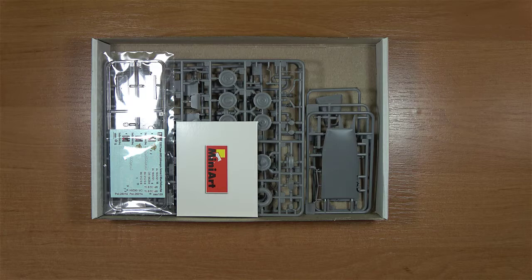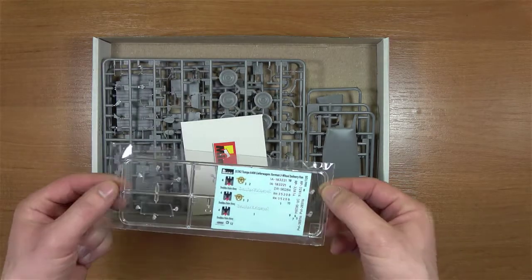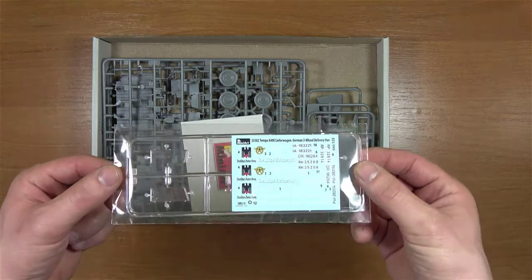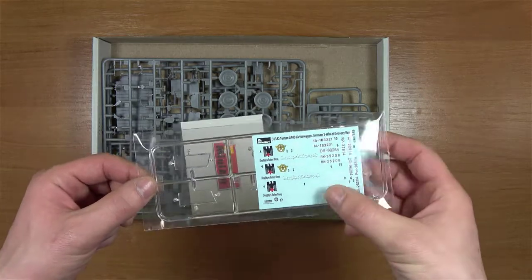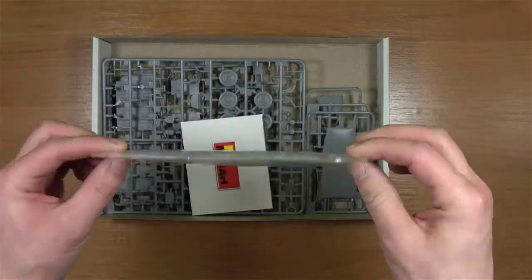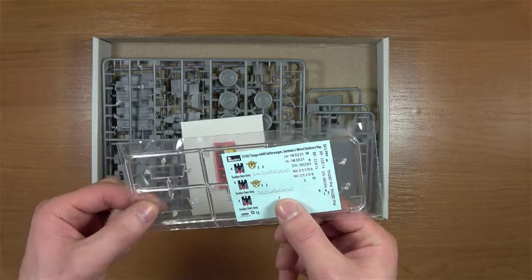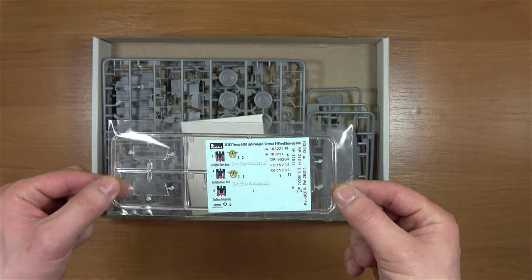Na pierwszy rzut pójdzie zafoliowana jeszcze ramka z elementami przeszklonymi oraz z kalką. Te elementy zawsze się na końcu otwiera, żeby nie były zarysowane, pogrudzone.